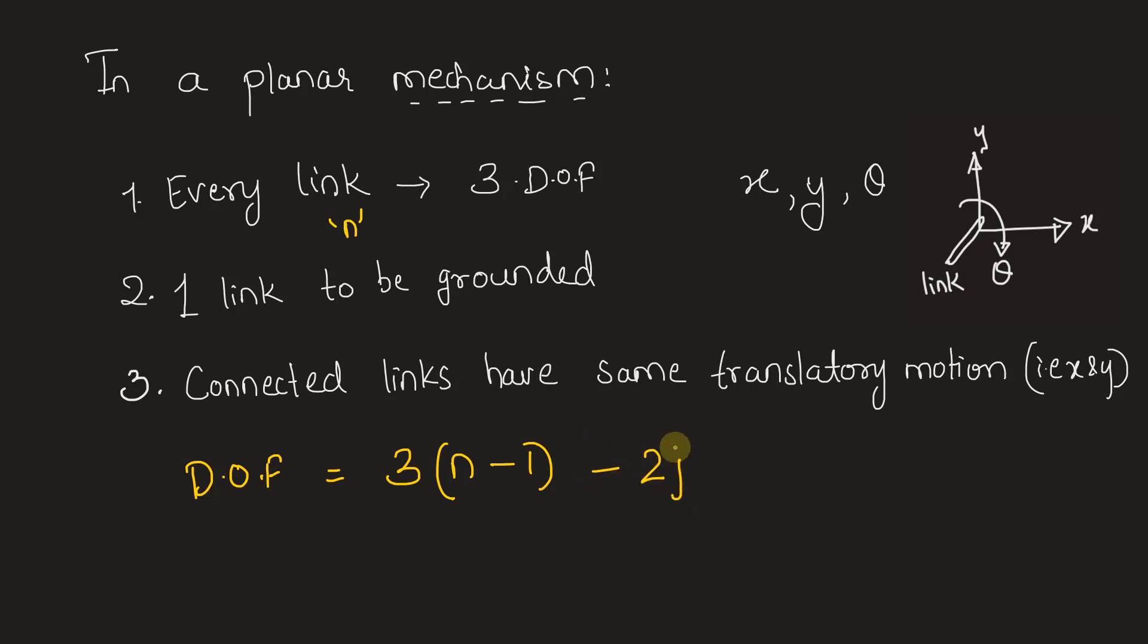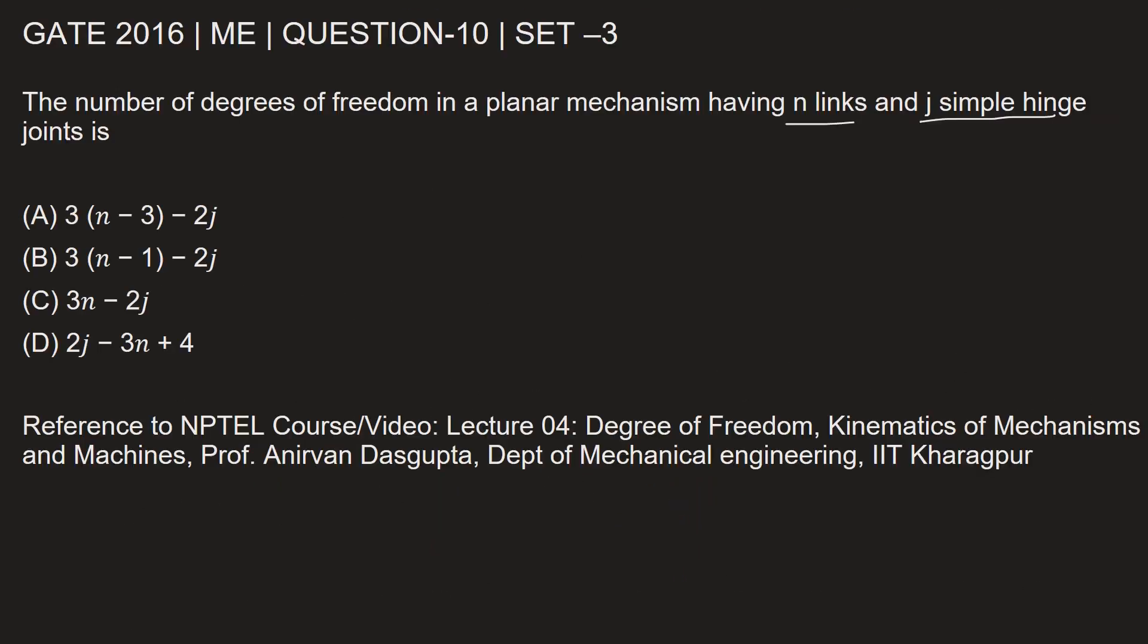So we can see degrees of freedom will be 3 into (n-1) minus 2j, where n is number of links and j represents the number of joints. Hence the correct option is option B.